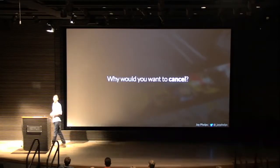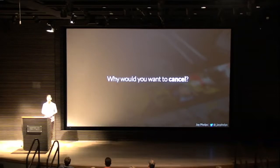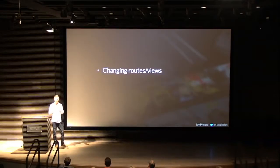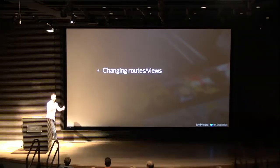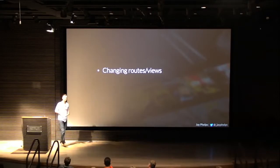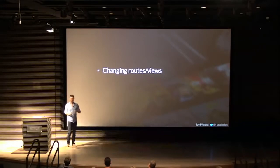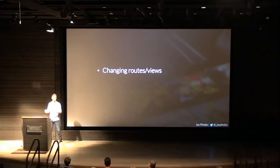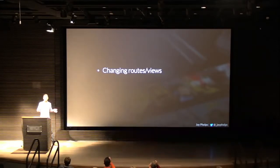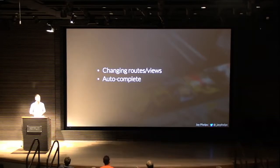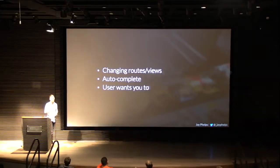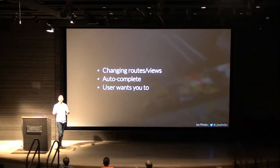In real-world applications, we quickly discovered two problems with promises: the guaranteed future and the single value. Why would you ever want to cancel a promise? Lots of reasons — for example, changing routes or views. You mount a component, go off and fetch an Ajax request on mount, and before the request finishes someone changes the route. You can't cancel that request. There's also the autocomplete use case, or simply when the user wants to cancel a request.